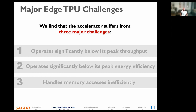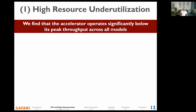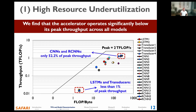First, the accelerator operates below its peak throughput during inference. We illustrate this using a roofline model where the x-axis shows arithmetic intensity in operations per byte, and the y-axis shows achieved throughput in teraFLOPS per second. The peak throughput of the Edge TPU is 2 teraFLOPS per second. We observe that transducers and LSTM models have the greatest underutilization, with some achieving less than 1% of peak throughput. While CNNs and RCNN models do somewhat better, they achieve only 52.2% of peak throughput on average.